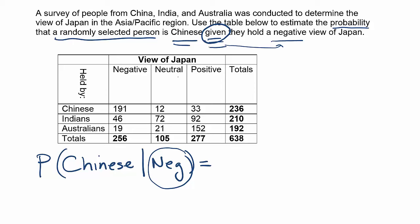Among those people, what percent are Chinese is what they're asking. So we're going to focus all our attention on the column that corresponds to having a negative view of Japan, because those are the only people we're interested in. The total of that column becomes your denominator for the fraction.